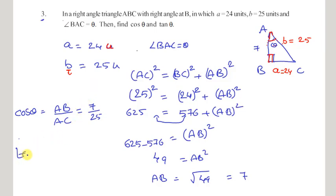Now we have to find tan theta. How we define tan theta: tan theta is opposite side to the angle theta, that is BC, by adjacent side to the angle theta. Adjacent side to the angle theta is AB. Substitute the values of BC and AB in it. BC is 24, AB is 7. These are the required values. That is, cos theta is 7 by 25 and tan theta is 24 by 7.